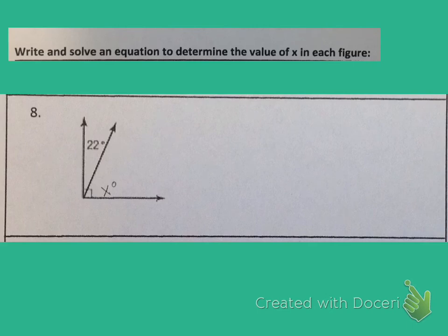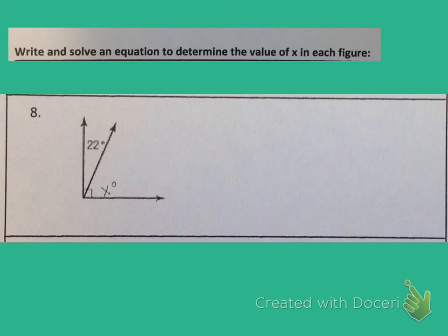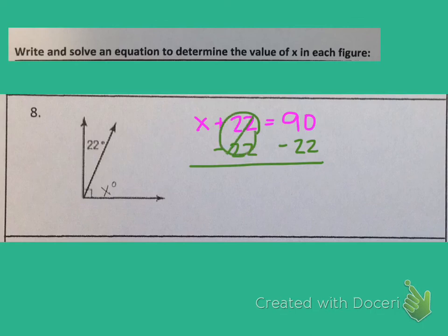Let's try the next one. We need to write and solve an equation to determine the value of x. I notice that when these two angles come together, they form a corner, which means they are complementary and add up to 90 degrees. They are also adjacent angles. So x plus 22 equals 90. I subtract 22 from both sides: plus 22 minus 22 cancels out, leaving just x. And 90 minus 22 is 68. So the measure of angle x is 68 degrees.